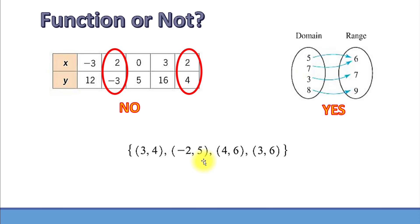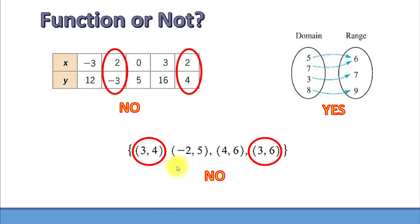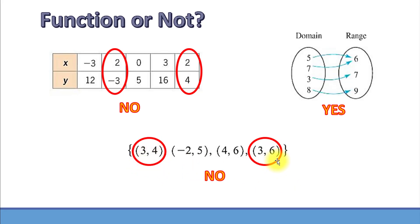Here's our next example. Is this a function? The answer is no. Notice that we have two ordered pairs with input 3 and two different outputs — 4 and 6. That violates the function definition: one x value corresponds to two different y values.